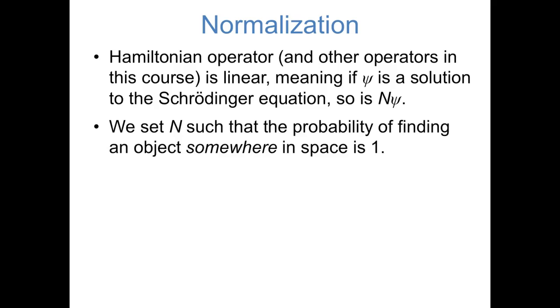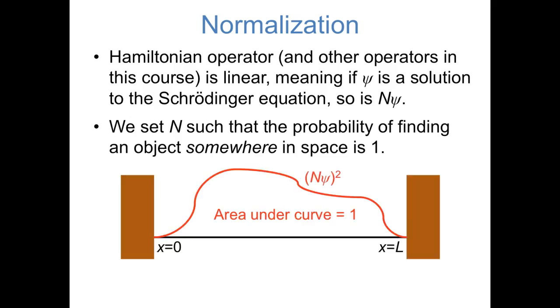Our convention in quantum mechanics is going to be to set that constant such that the probability of finding an object somewhere in space is 1. This makes sense. Even if we don't know exactly where the object is, we would hope that the probability of finding it anywhere in space would add up to 100%. So if we were to take some normalized wave function and plot its square, the area under the curve in the region of space that we care about should be equal to 1. In other words, if we look everywhere in space, we're definitely going to find this object somewhere.